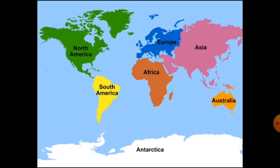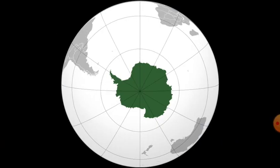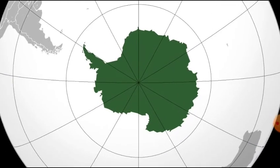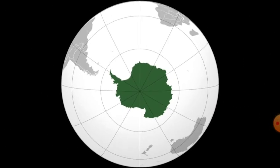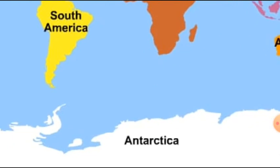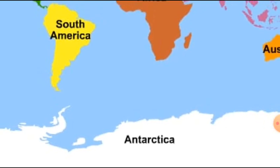Moving on to Antarctica. It is completely in the southern hemisphere and it is a huge continent. The south pole lies almost at the center of Antarctica. As Antarctica is located in the south polar region, it is completely covered with thick ice sheets. There are no permanent human settlements. Many countries have research stations in Antarctica. India also has research stations there, named Maitri and Dakshin Gangotri.